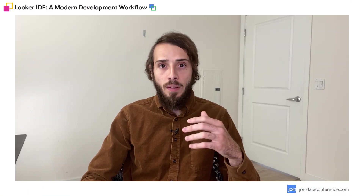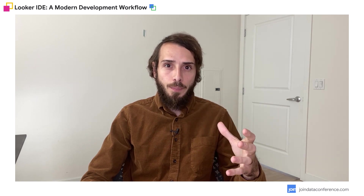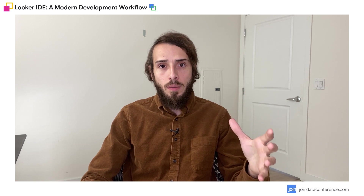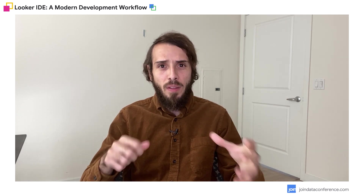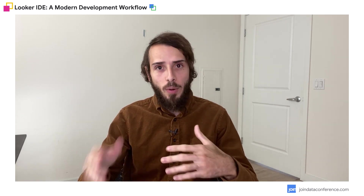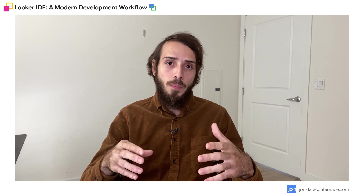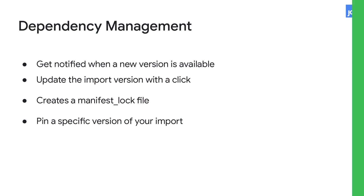We have also completed a couple of major features for power users. Until now, if you had a project with remote dependencies, you needed to go to your manifest file, know exactly which commit you needed to update, write it in the file, and then deploy the project. Now, with this feature, if a dependency has been updated, you will get a notification and be able to update these dependencies with just a click of a button. We are bringing the best from the software engineering world — the best practices from NPM and Yarn — and we are going to create a manifest lock file that helps you pin your dependencies to a specific version.